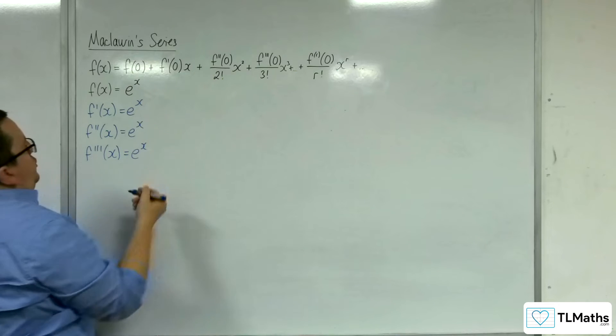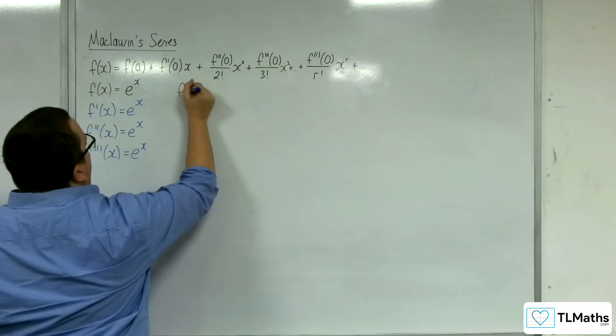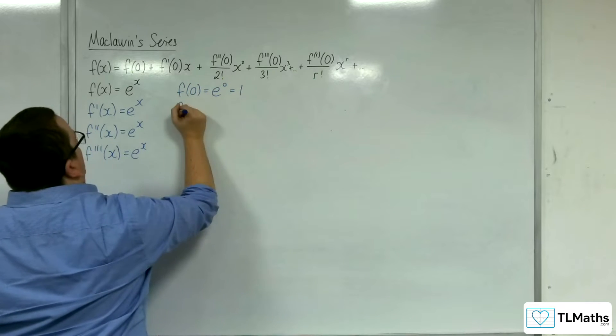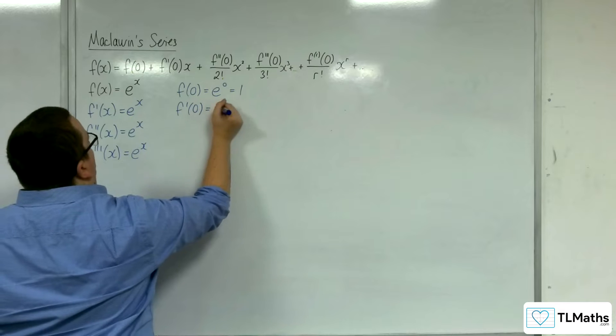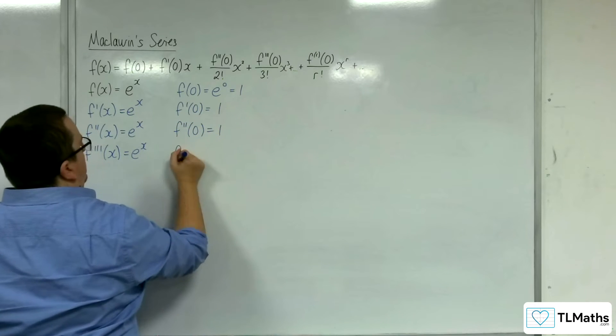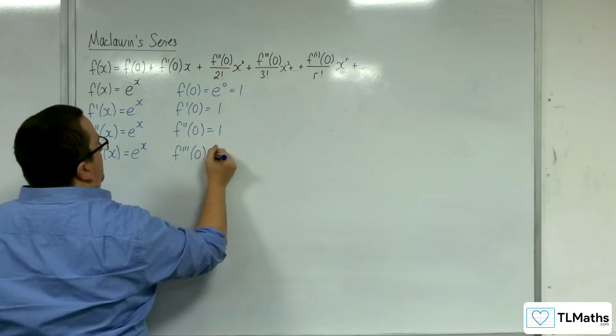So then we evaluate each of these when x is 0. f of 0 is e to the 0, which is 1. f prime of 0 will also be 1, f double prime of 0 will also be 1, and f triple prime of 0 will also be 1.